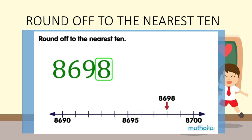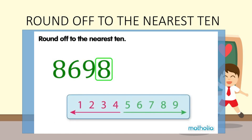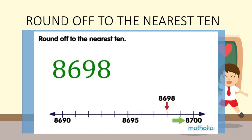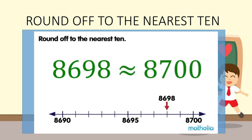Digits that are 5 or more are rounded up. So, 8698 is rounded up to 8700. To the nearest 10, 8698 is approximately equal to 8700.